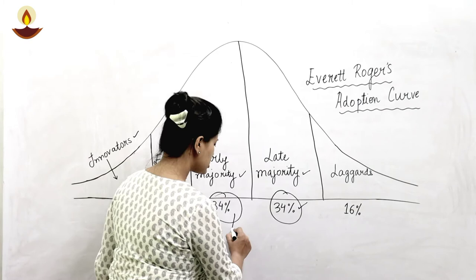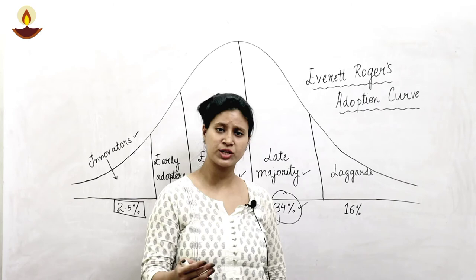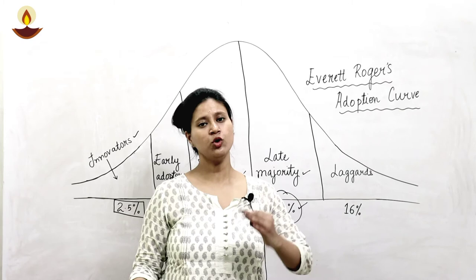Then we come to the Laggers. As the name suggests, they don't like change. They don't like new products. They don't rely on new innovations and new products. They don't like the recommendations; they don't like the technology themselves. The percentage of Laggers is 16%.